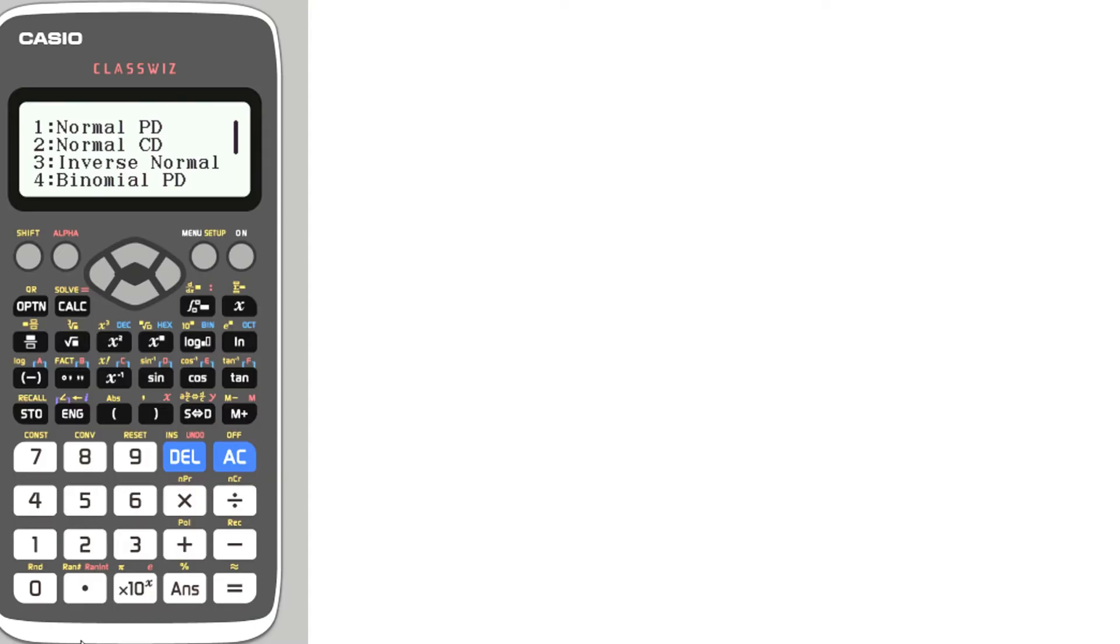When we're into this menu, you'll see that we've got three normals: Normal PD, Normal CD, and Inverse Normal. In this first part, we're just going to look at Normal CD, which is the cumulative distribution, and then later we'll look at the Inverse Normal. The Normal PD we're going to leave alone.